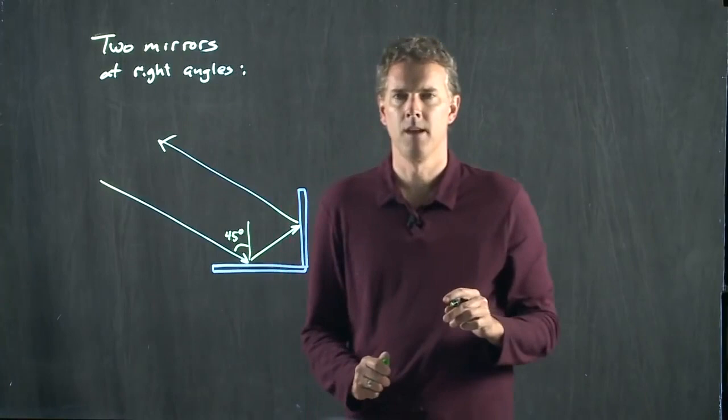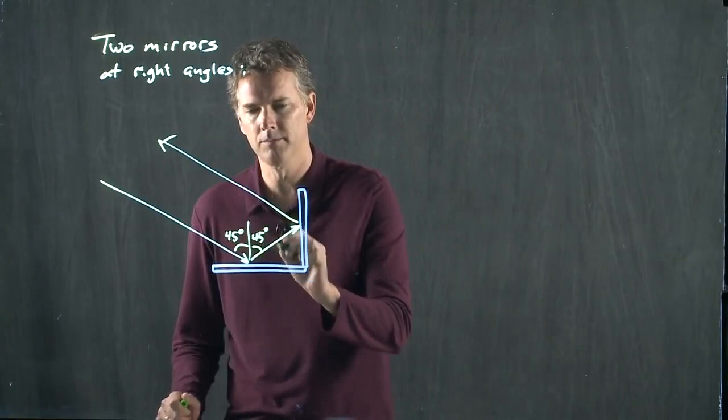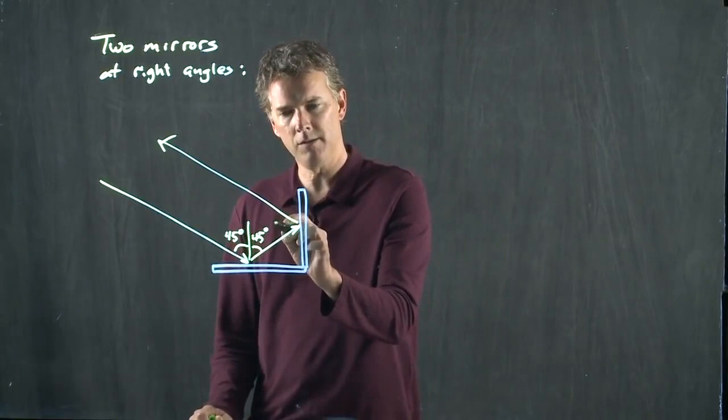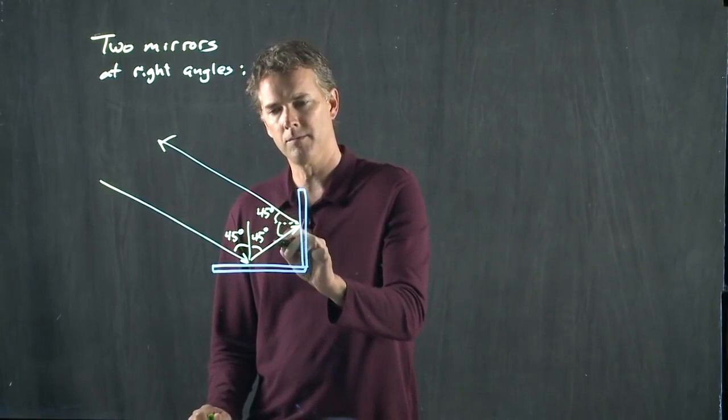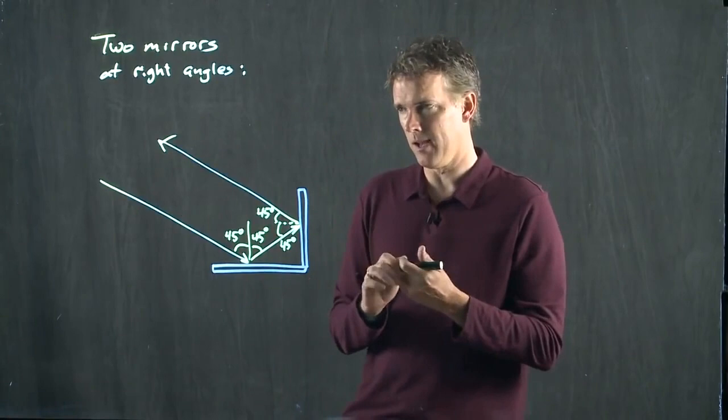And if that angle is 45 degrees, then this angle is 45 degrees. And if those two angles are 45 degrees, then those two angles are also 45 degrees. Everything adds up. The outgoing ray is, in fact, parallel to the incoming ray.